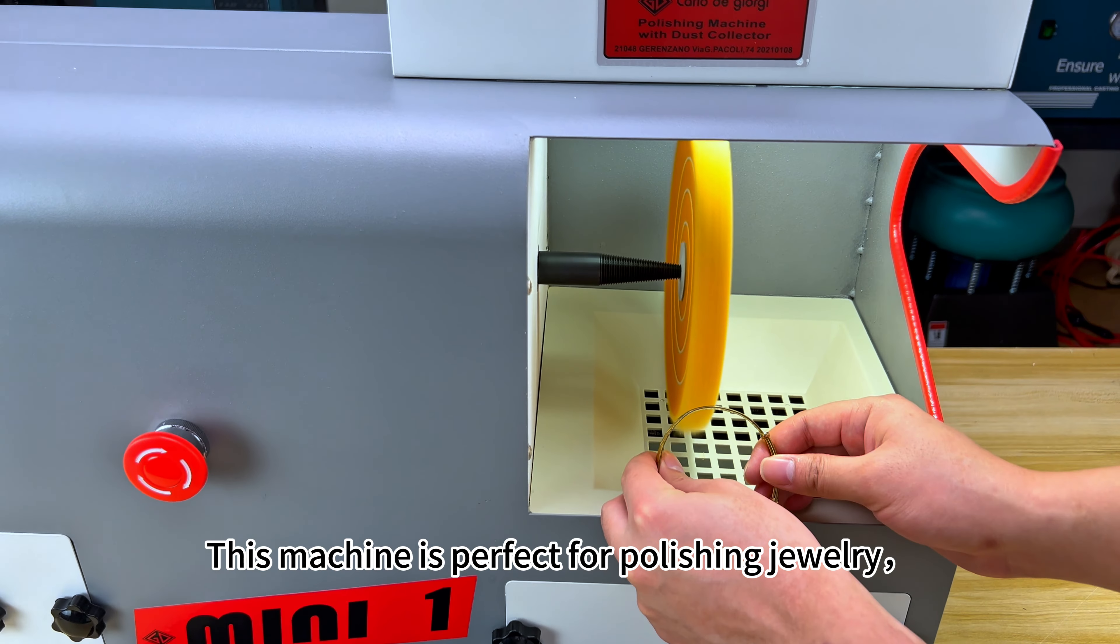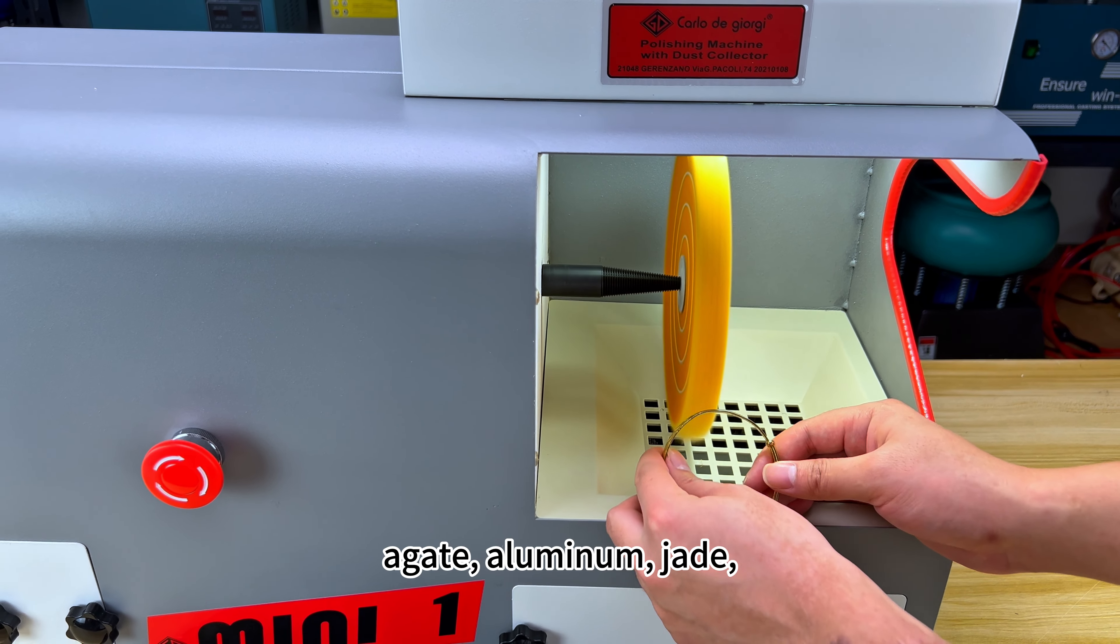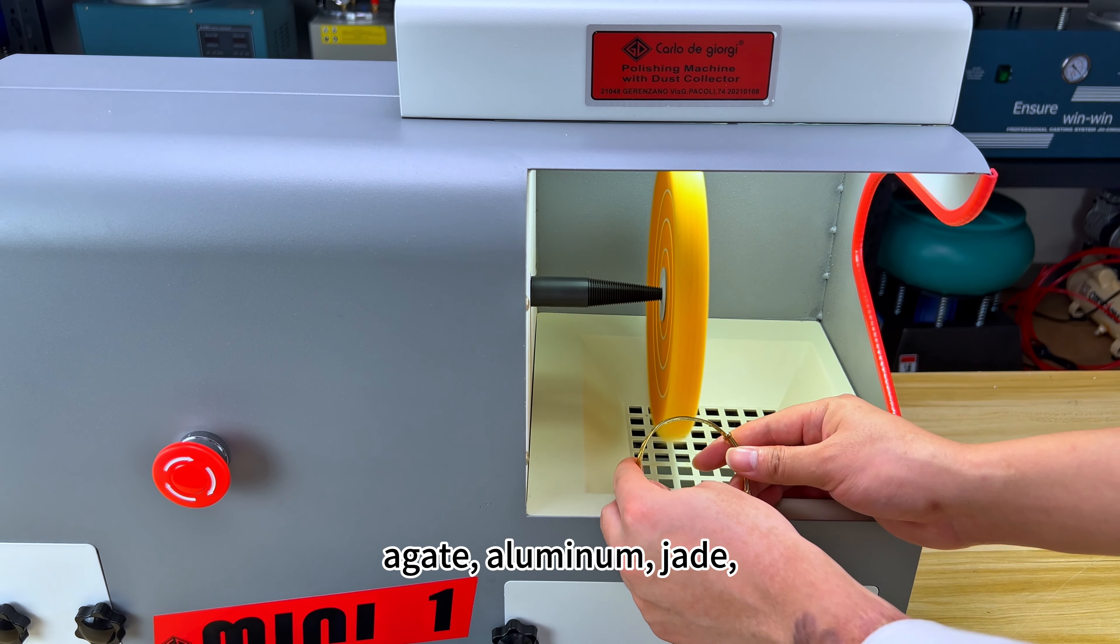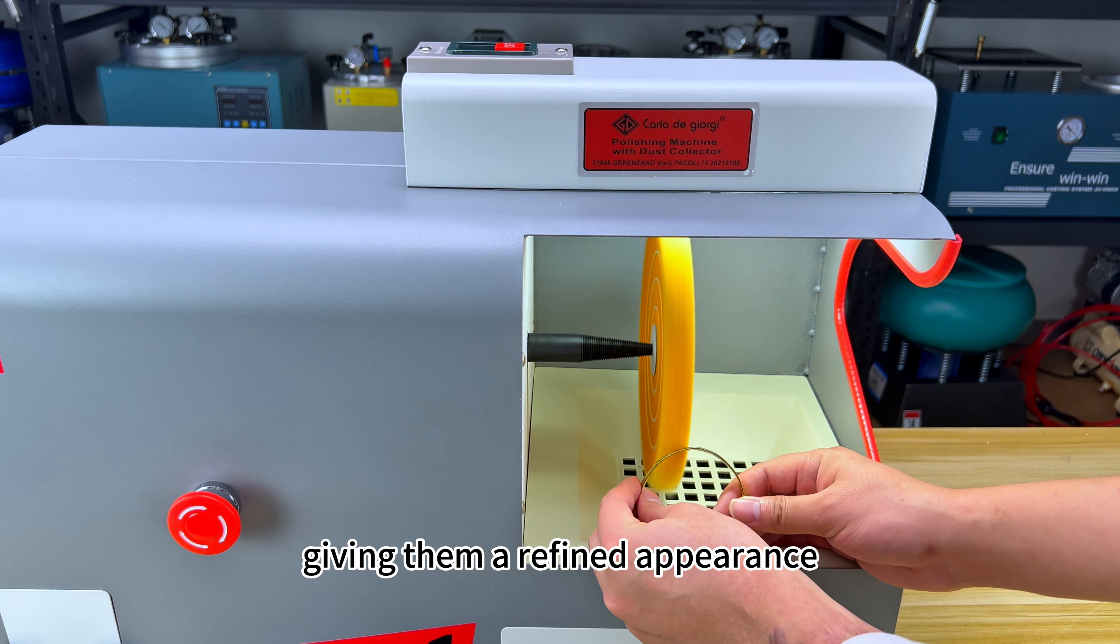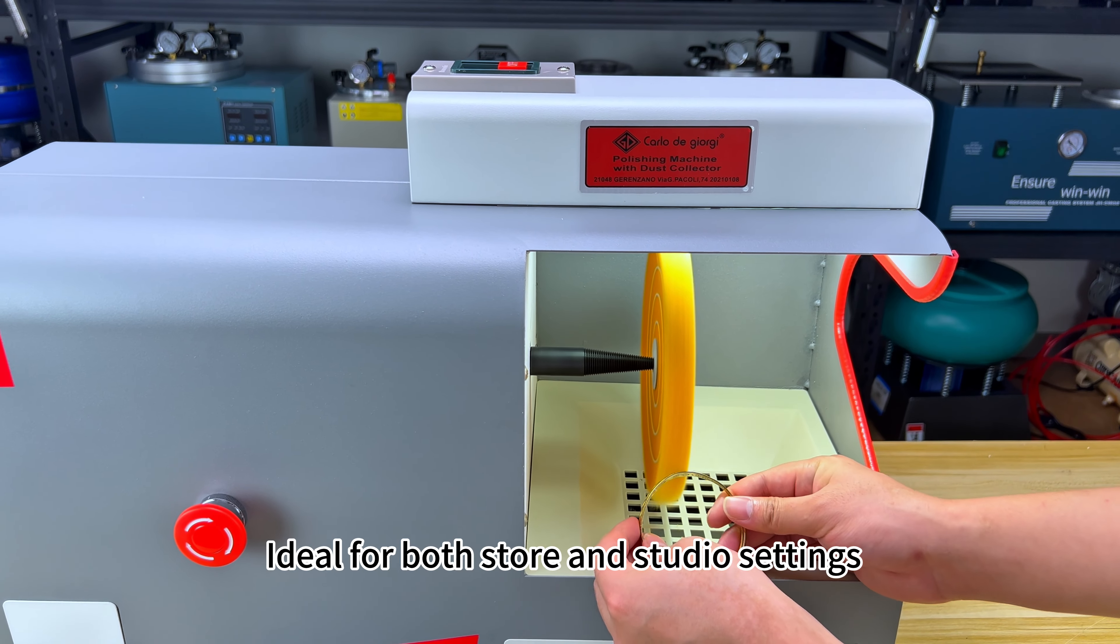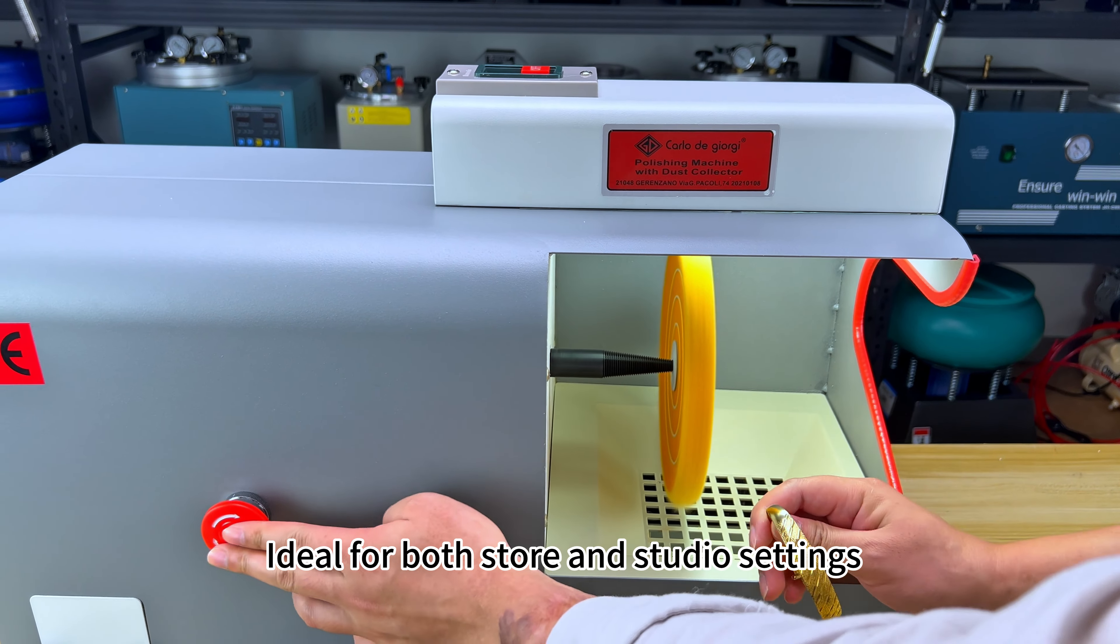This machine is perfect for polishing jewelry, agate, aluminum, jade, acrylic dental materials, metal parts, and plastic parts, giving them a refined appearance. Ideal for both store and studio settings.